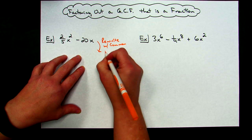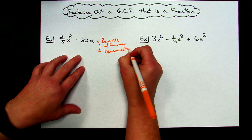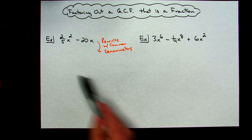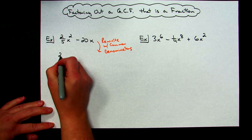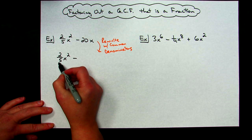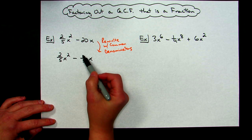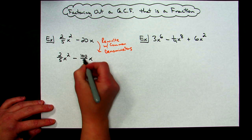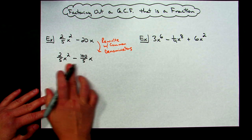Once you get common denominators, you can look at those fractions pretty easily and see what your greatest common factor is going to be. I'm going to choose the denominator already in the given fraction, so that term stays as 2/5 x². Now I force the second term to a denominator of 5. I ask myself: what number divided by 5 gives me 20? It's 100. So 100/5 equals 20 — these two things are equivalent. I've just gotten common denominators using the denominator from that first fraction.